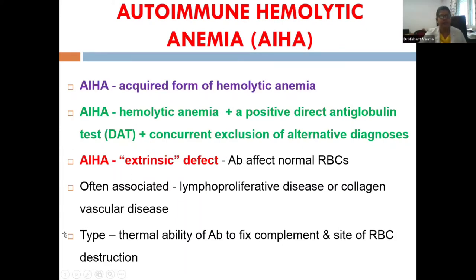Most cases of this disorder are associated with some underlying problem like lymphoproliferative disease or a collagen vascular disease. The type of autoimmune hemolytic anemia is defined by the thermal ability of the antibody to fix the complement and its site of RBC destruction.